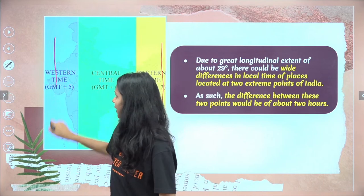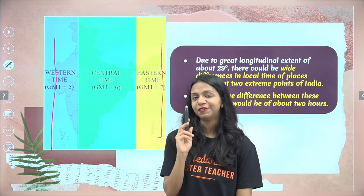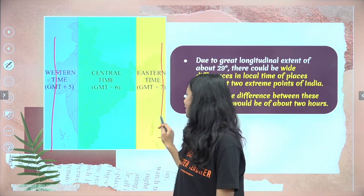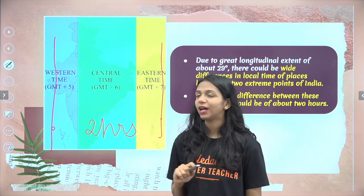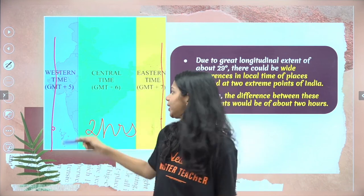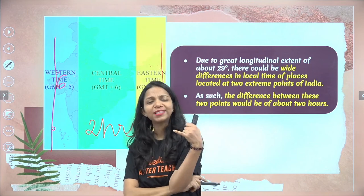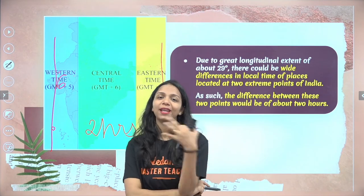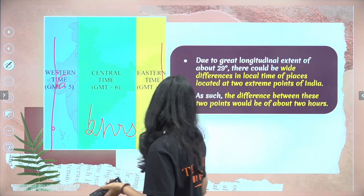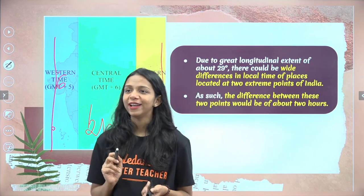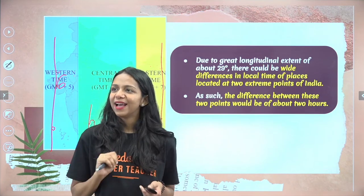Because our country is so huge, there is a big difference in longitudes, and so a big time difference. The time difference between the easternmost and westernmost longitudes is almost two hours. That means in Arunachal Pradesh, if it is 8 o'clock, it is only 6 o'clock in Gujarat. To make it easier, we have Indian Standard Time, which is 82 degrees 30 minutes east longitude.